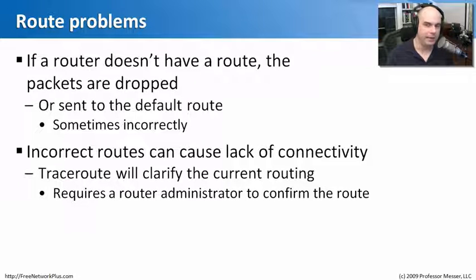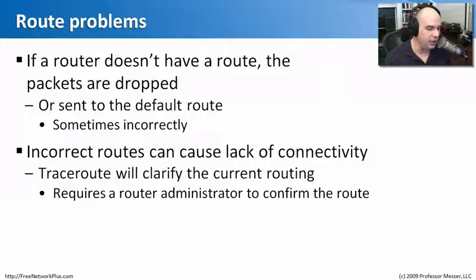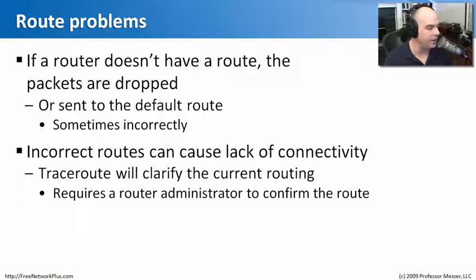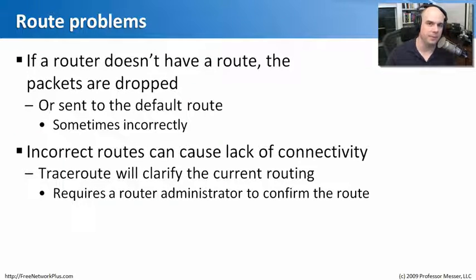You can't ping it, you can't get to where you're going, you try to browse and can't browse anywhere. The traffic is ultimately reaching a router and being dropped. If you do a traceroute, you can see where the packet goes and then where it stops going any further. You can provide that traceroute information to the router administrator and say, I'm escalating this problem because I believe this route doesn't exist to wherever it is we're trying to go.